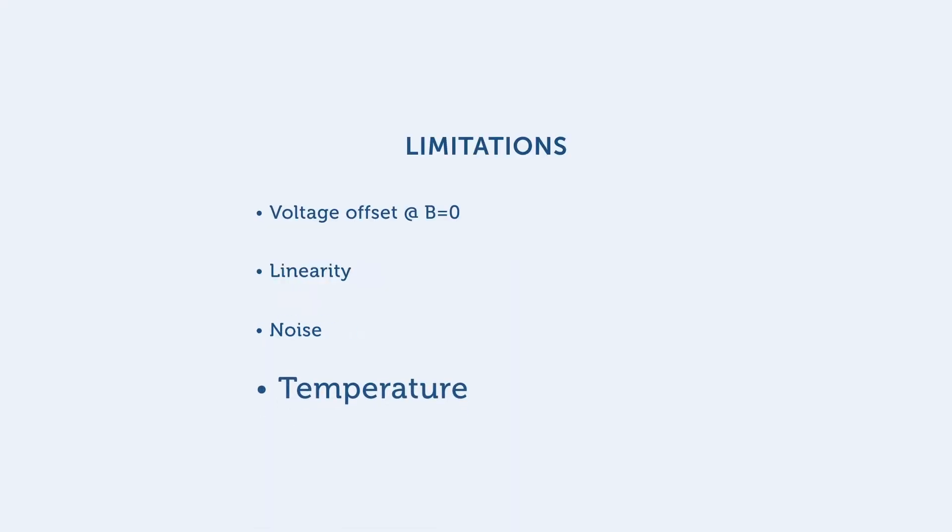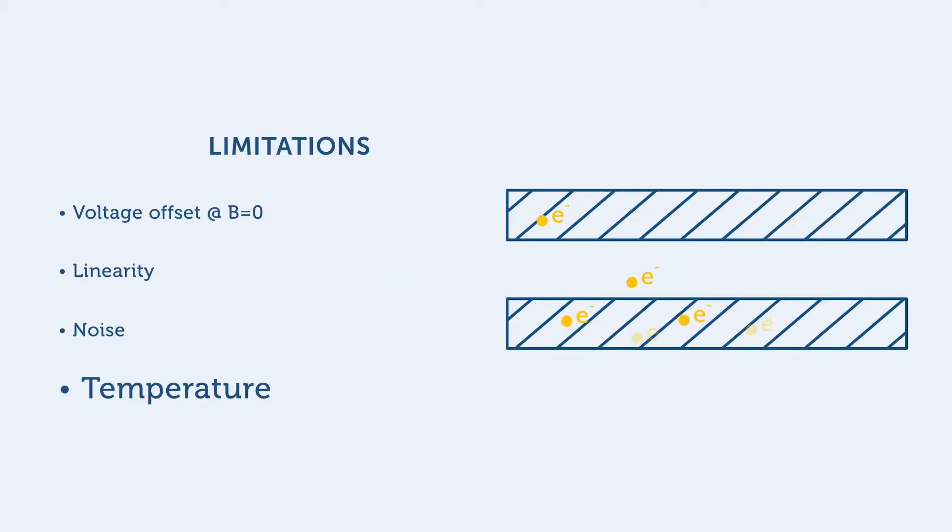The Hall sensor output is also temperature dependent due to the change of the number of conductors in the conduction band as the temperature changes. This affects both the offset as well as the gain of the device.